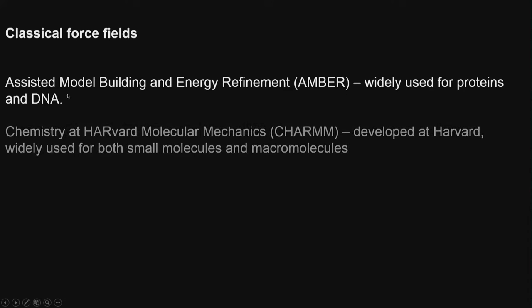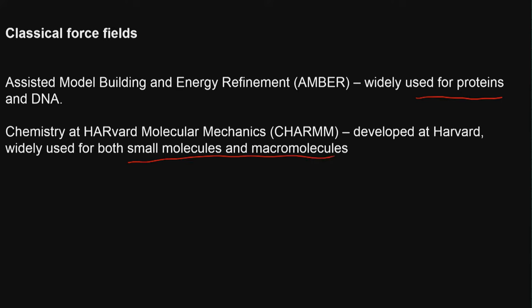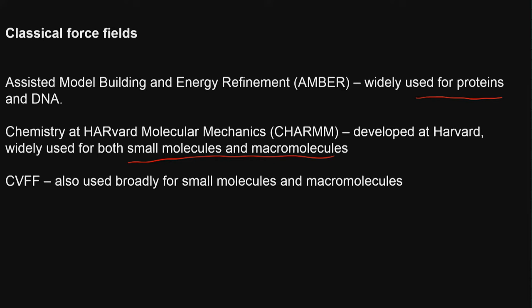AMBER — assisted model building and energy refinement — is widely used for proteins. CHARMM is another very popular force field used for small molecules and macromolecules. Generally, MM-type force fields are used for organic drugs, AMBER is used for proteins, and CHARMM is used for small molecules and macromolecules. This is the rule of thumb. CVFF is broadly used for small molecules and macromolecules — it is a consistent valence force field used in some software packages.